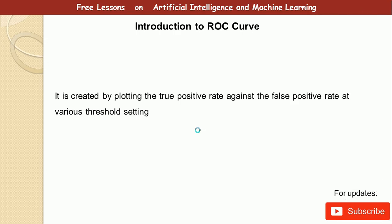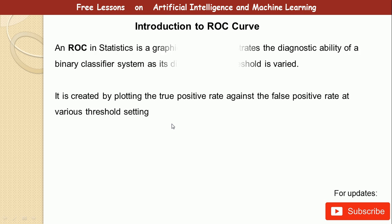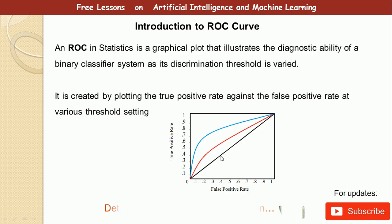The ROC curve — receiver operating characteristics — is not fully covered in this lesson, but I want to introduce it so it will be familiar when we return to it. The ROC curve is created by plotting the true positive rate against the false positive rate at various threshold settings. Full details will be covered in a dedicated presentation.